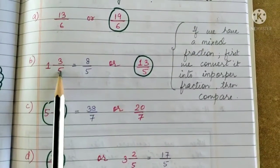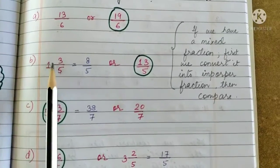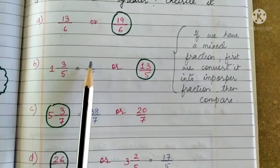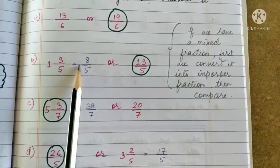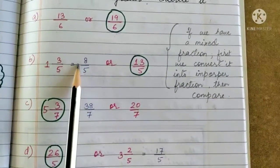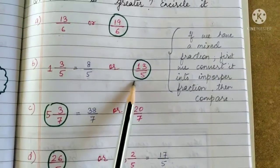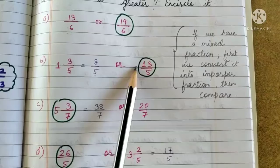Multiplying the denominator to the whole number and then adding the product, that is 5 times 1, 5 plus 3, 8, 8 by 5. So now we have both questions as improper fractions. So we can compare, 8 by 5 or 13 by 5? 13 by 5 is the greater.